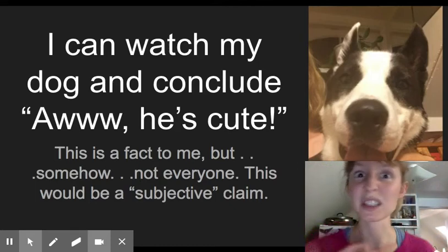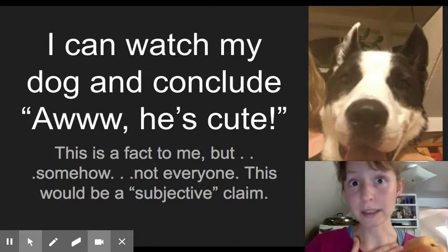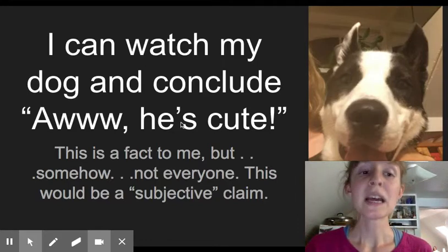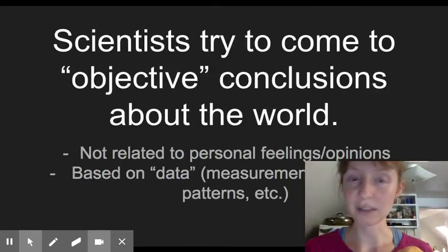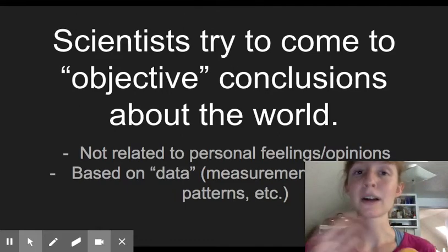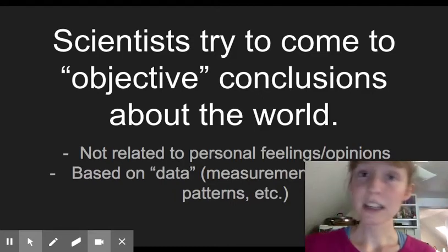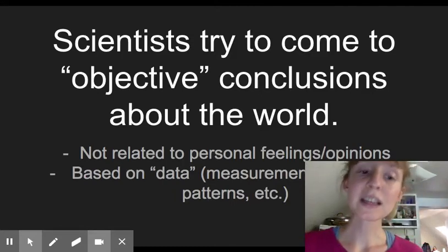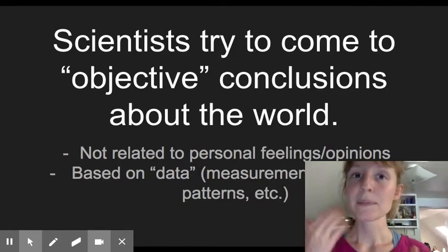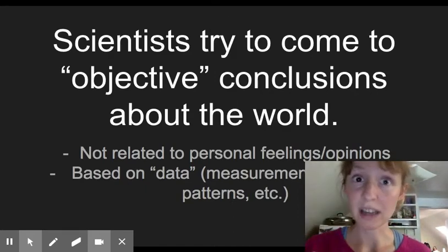Meaning it's subject to whoever is saying it. You could hate peaches and you could think my dog was ugly. I would disagree with you, but you could have that opinion. Scientists try to come to objective conclusions about the world. Things that are not so debatable as my dog is cute or peaches taste good. Objective conclusions are not related to personal feelings or opinions and they're based on data. They're based on repeatable patterns and measurements and observations that can be observed over and over again consistently.